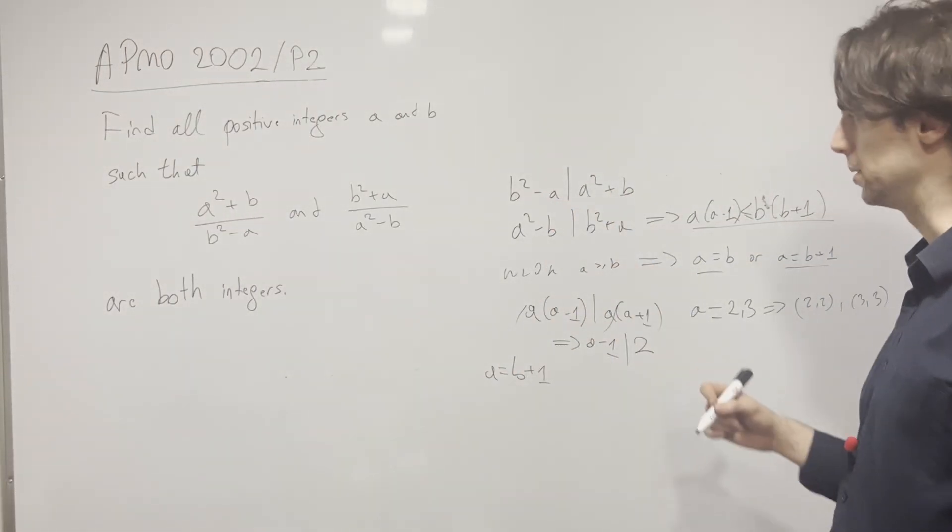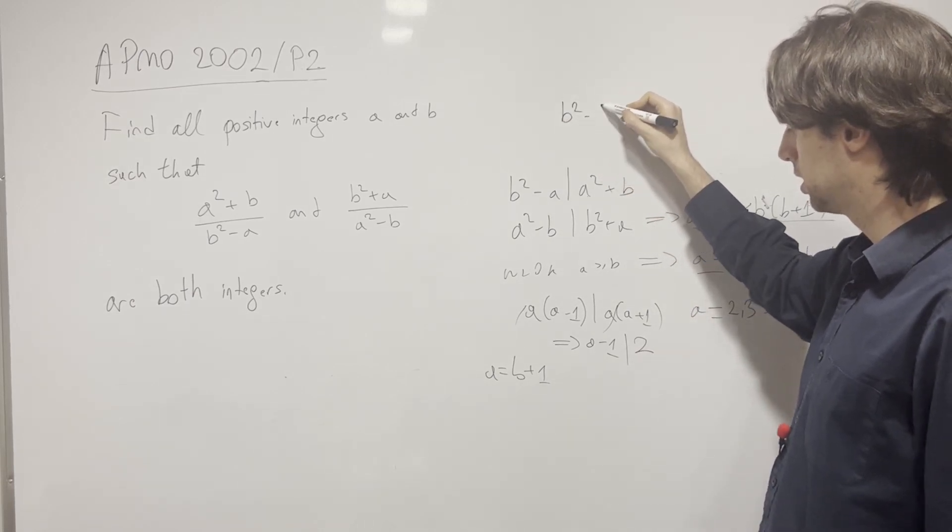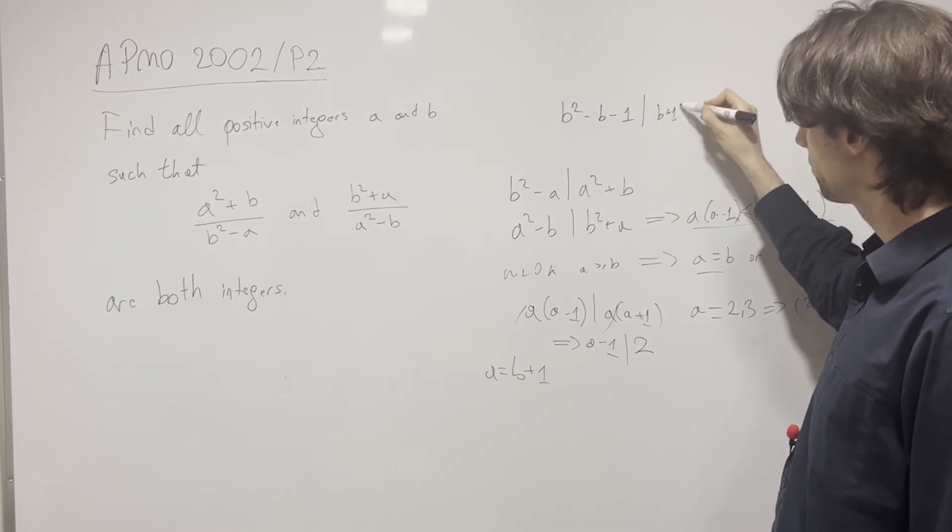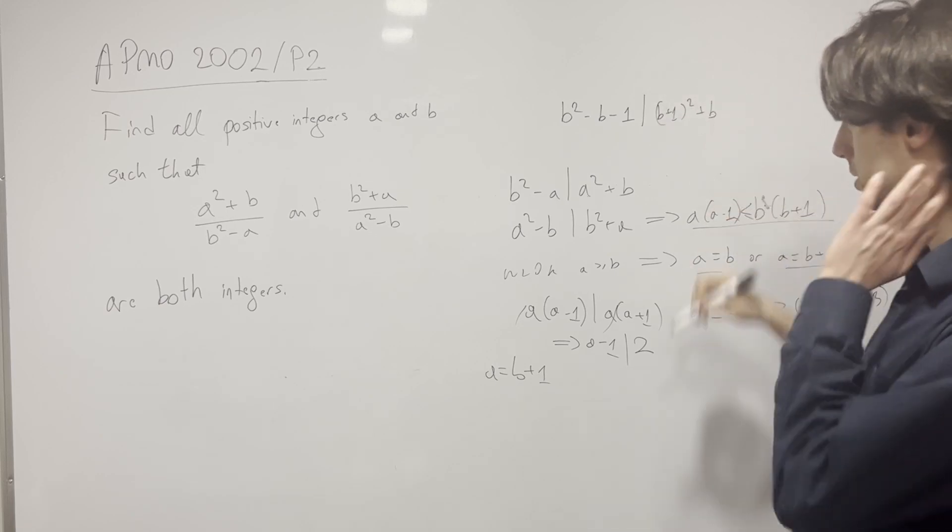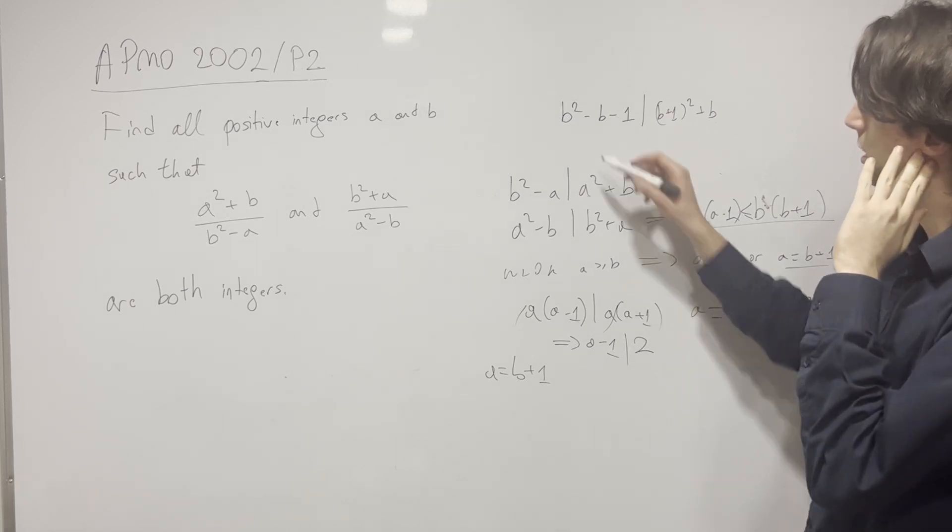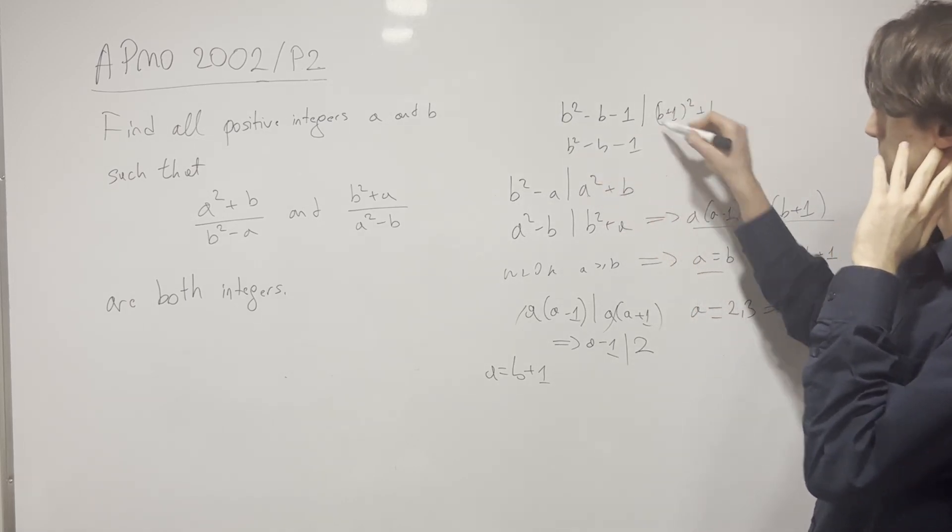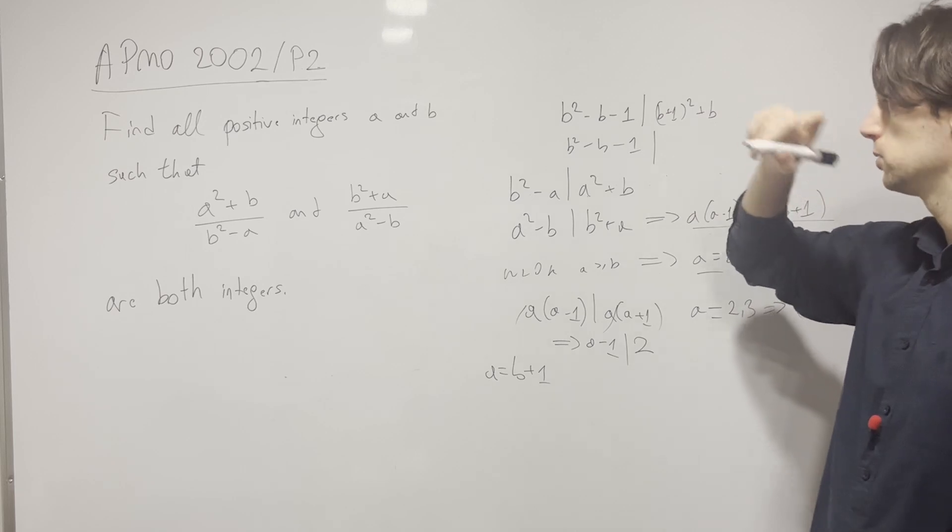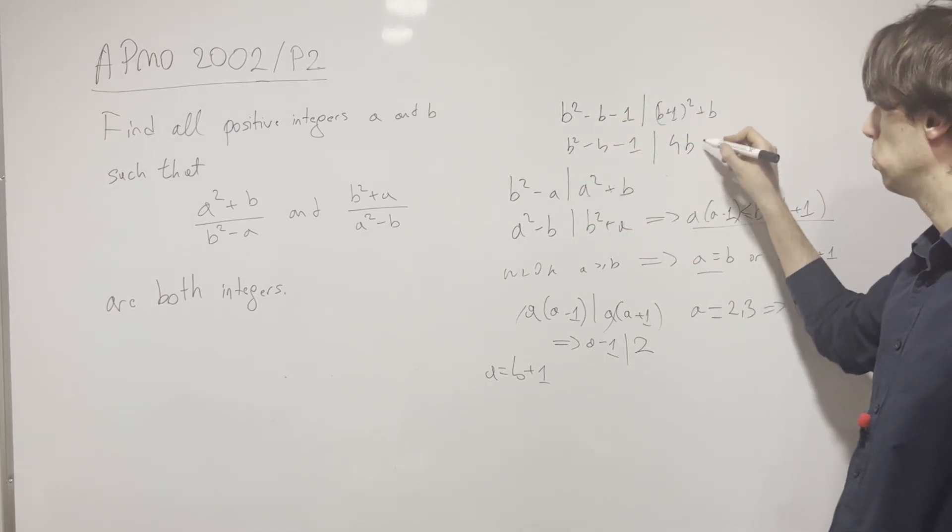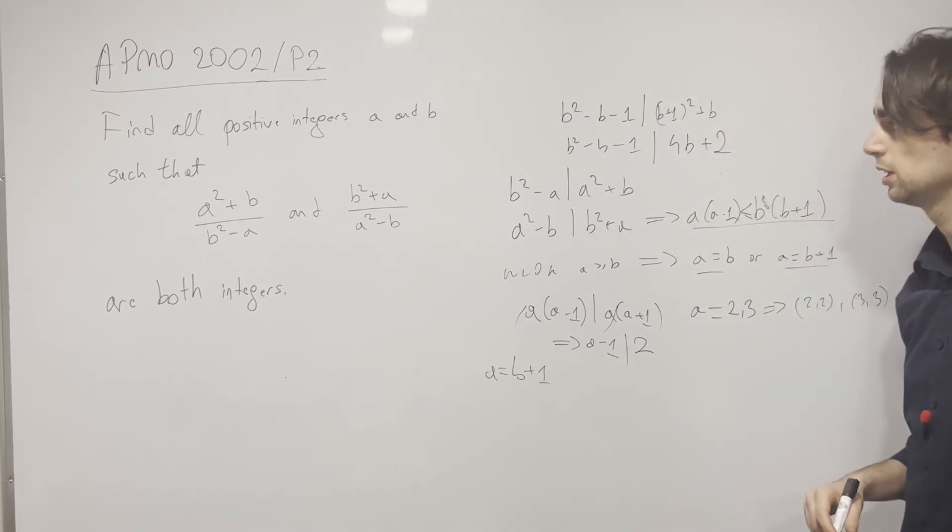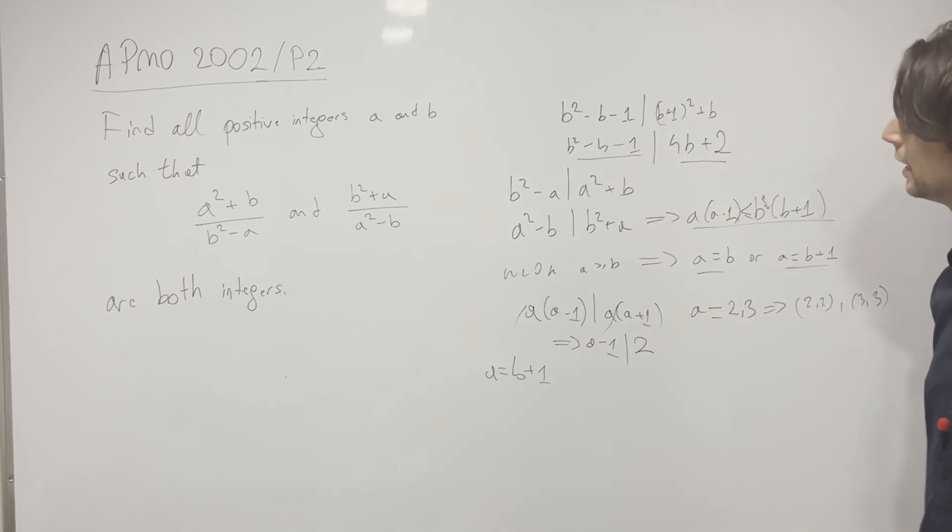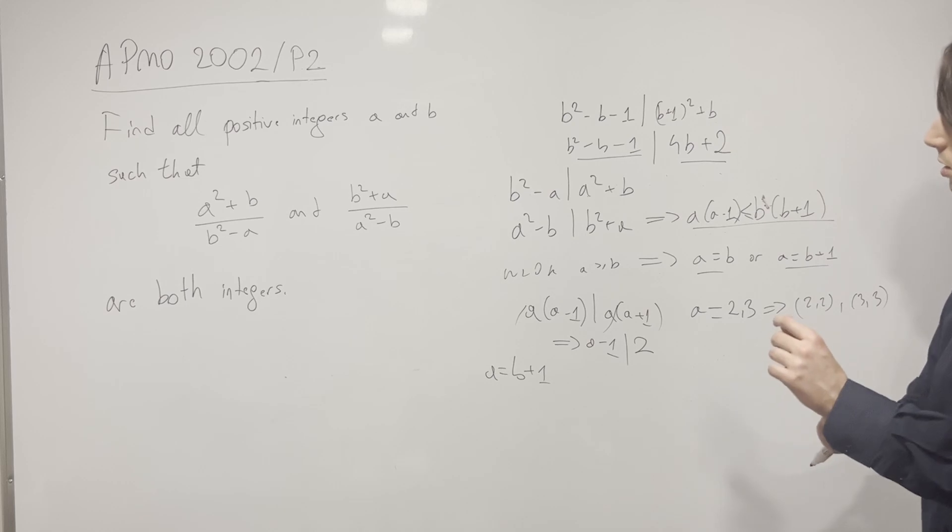I just want to substitute a for b. So this one becomes b² - b - 1 divides (b + 1)² + b. Now that's going to be interesting. This is b² - b - 1. When I subtract b² - b - 1 once from this, I get this divides 4b + 2. Now this is positive.